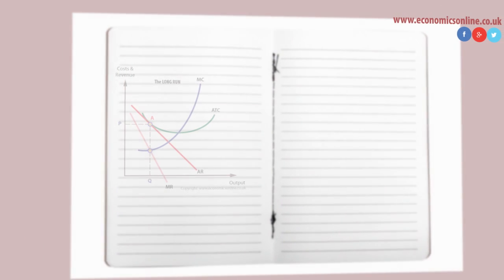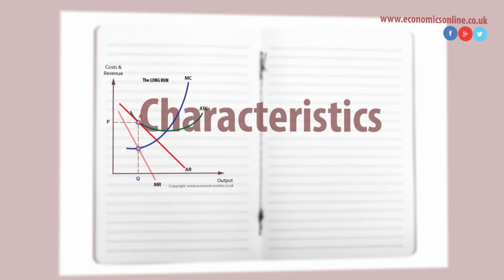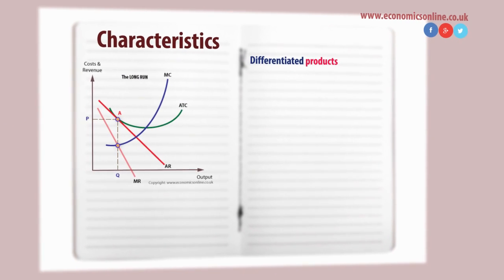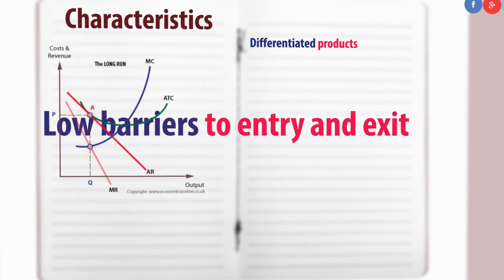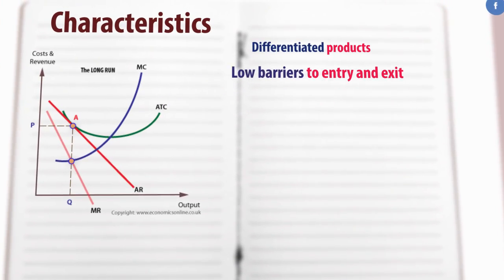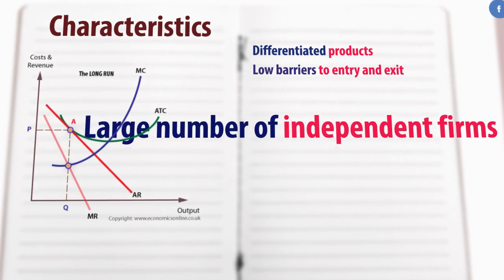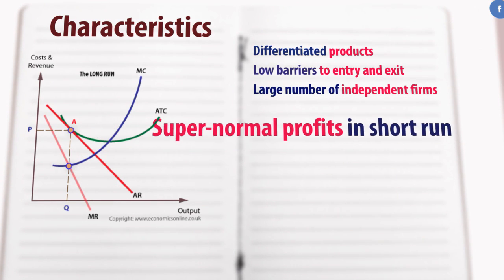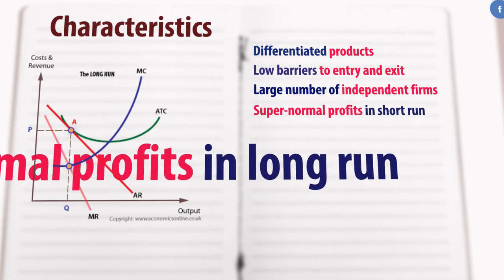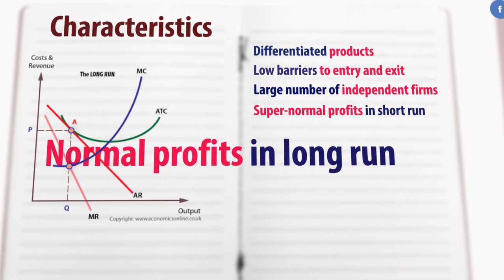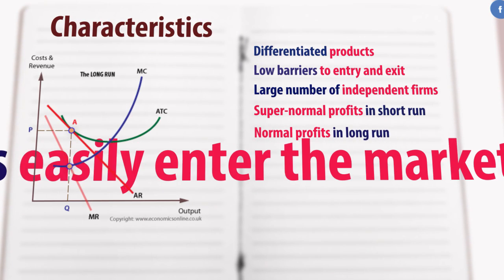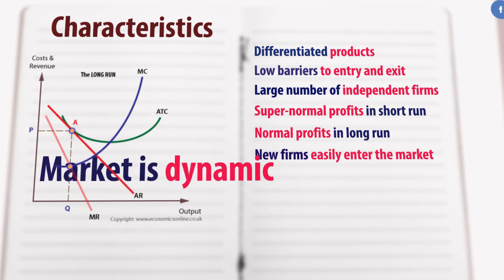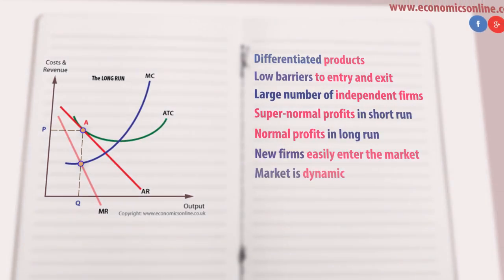Most high streets are populated with firms operating under monopolistic competition. The key characteristics of this market form are differentiated products, low barriers to entry and exit, and a large number of independent firms. Firms can exploit their differences and make super normal profits in the short run, while only normal profits are available in the long run as new firms enter. The market is very dynamic.